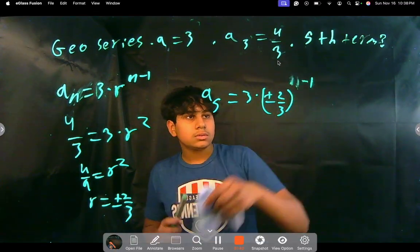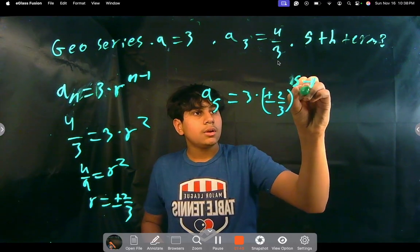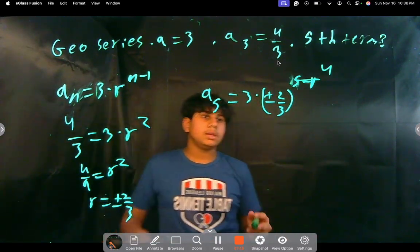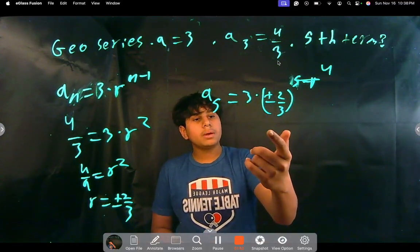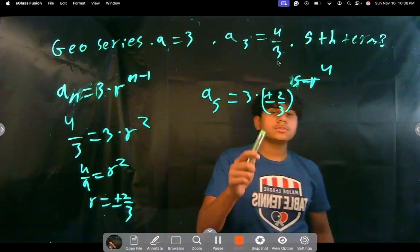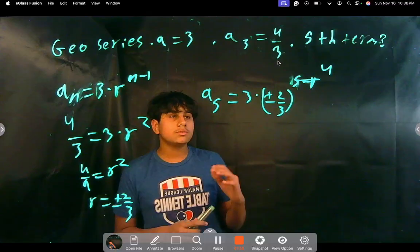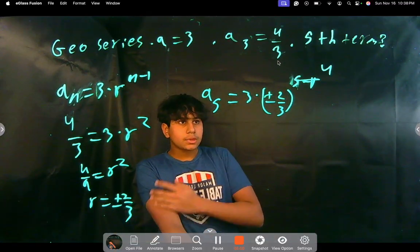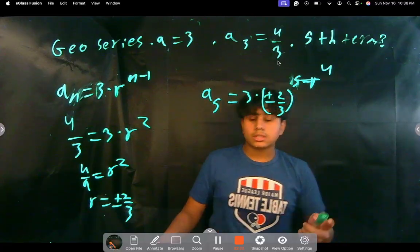So 5. Well, what is 5 minus 1? That's equal to 4, right? So, well, what does that mean? That means that despite what we take, 2 thirds or negative 2 thirds or 2 thirds, it doesn't really matter because if you take it to an even power, it's going to give you the same answer, right?